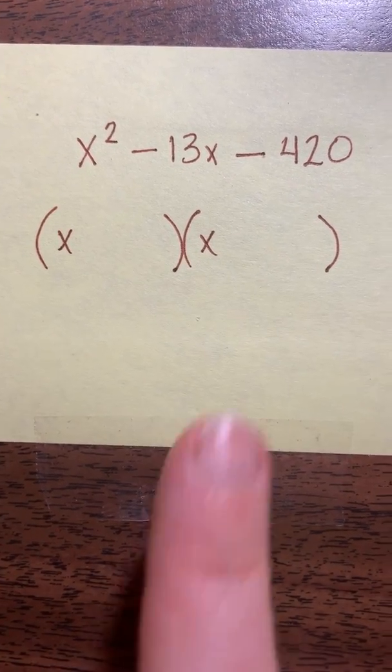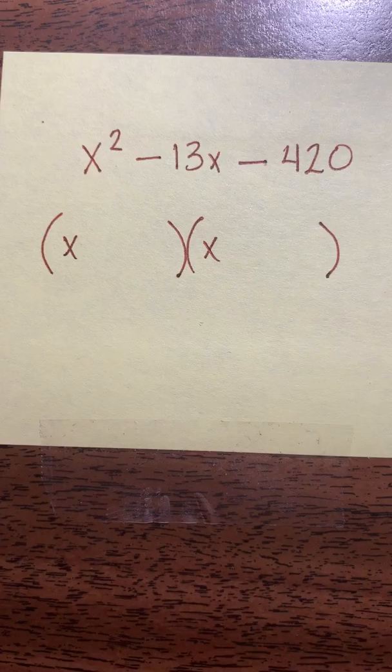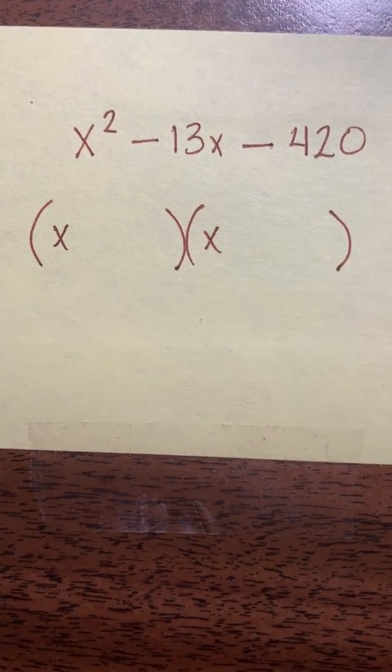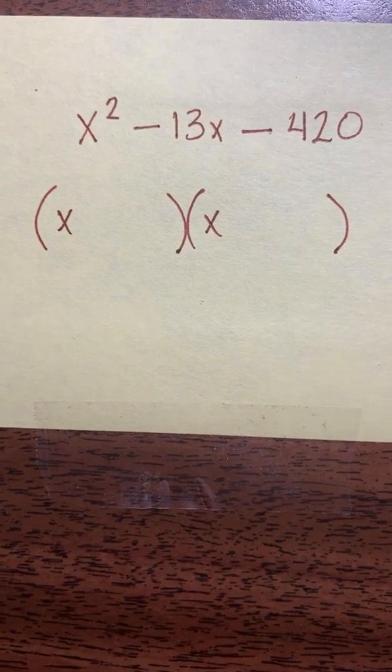and we'd like to find two factors of 420 that we can put into the double bubble here, and we need them to add together to give negative 13.